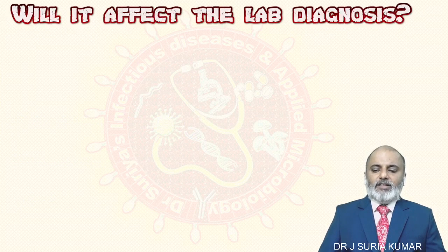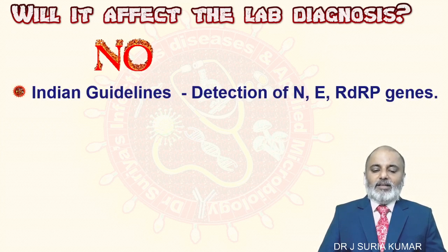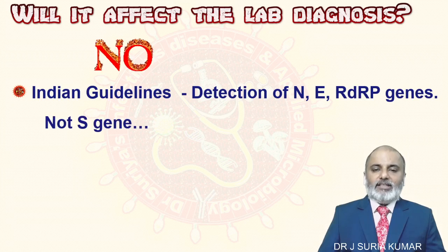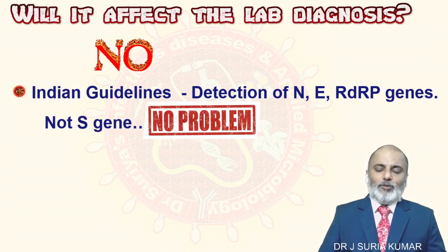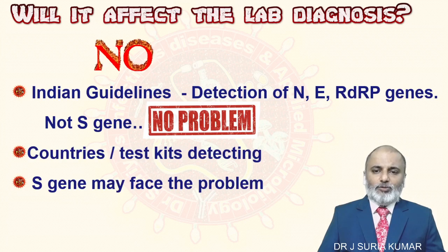Second question: will it affect lab diagnosis? Because we detect the gene, will the mutation affect that? For India, the answer is no. As per ICMR guidelines, we are detecting N gene, E gene, and RdRp gene — mainly not the S gene. The mutation happened mainly on the S gene, so there is no problem for Indian lab diagnosis. However, countries using test kits exclusively targeting the S gene may face problems.